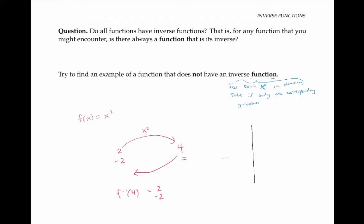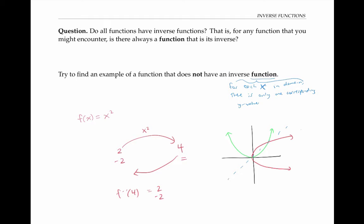It might be easier to understand the problem when you look at a graph of y equals x squared. Recall that inverse functions reverse the roles of y and x and flip the graph over the line y equals x. But when I flip the green graph over the line y equals x, I get this red graph. This red graph is not the graph of a function because it violates the vertical line test. The reason it violates the vertical line test is because the original green function violates the horizontal line test and has two x values with the same y value. In general, a function f has an inverse function if and only if the graph of f satisfies the horizontal line test, i.e., every horizontal line intersects the graph in at most one point.